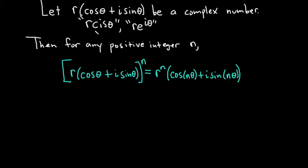Alternatively, if we use the cis notation, by the way cis stands for cosine i sine, this would be bracket r cis theta raised to the nth power. You get r to the n, cis n theta.